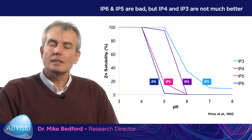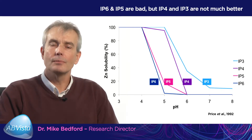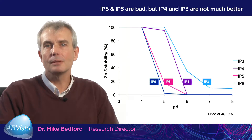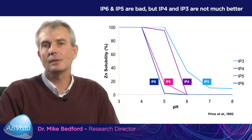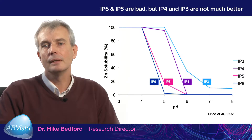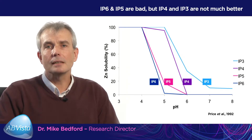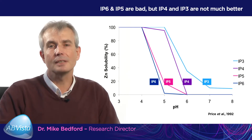This visual shows another interesting facet of the differential properties of the esters IP6, IP5, IP4 and IP3. On the y-axis is the solubility of zinc and how that's influenced by pH in the presence of IP6, IP5, IP4 and IP3. At pH 3, zinc is 100% soluble regardless of whether IP6, IP5, IP4 or IP3 is present. As the pH rises towards pH 5, IP6 precipitates 100% of the zinc in solution, and IP5 precipitates almost 85-90%. At pH 6, IP4 is precipitating 100% of the zinc and IP3 is precipitating 65% of the zinc.